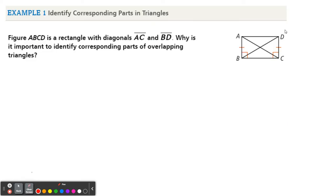Okay, so example 1 says identifying corresponding parts. Figure ABCD is a rectangle with diagonal segment AC and segment BD. Why is it important to identify corresponding parts of overlapping triangles?